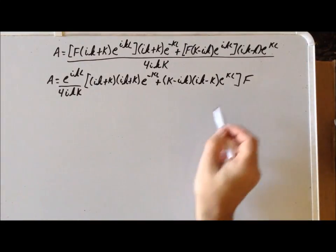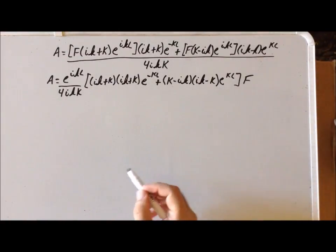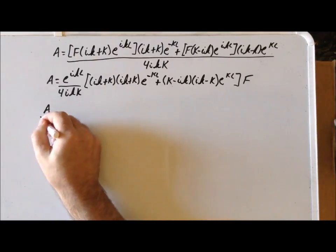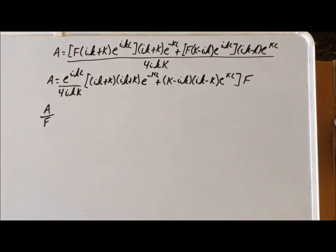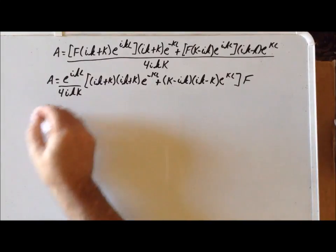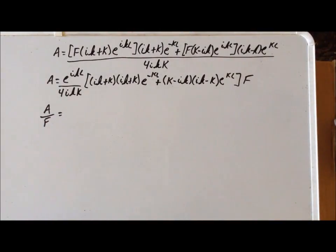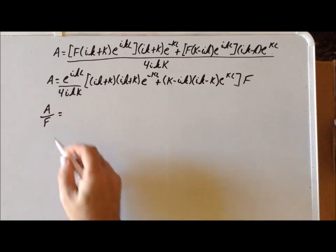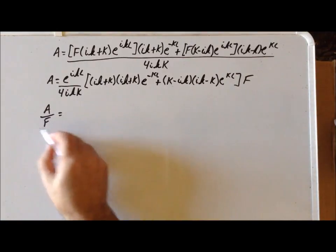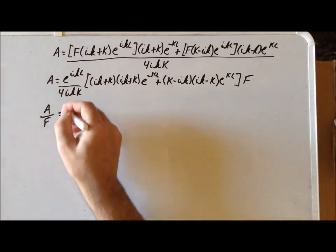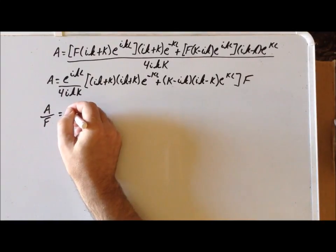It is relatively straightforward just to divide through both sides to get the important expression for the ratio A to F. The reason why that's important is A is related to the probability that a particle will go from left to right and enter into the barrier, and F is related to the probability that it will exit outside the barrier. So this is an important ratio for us to determine here.